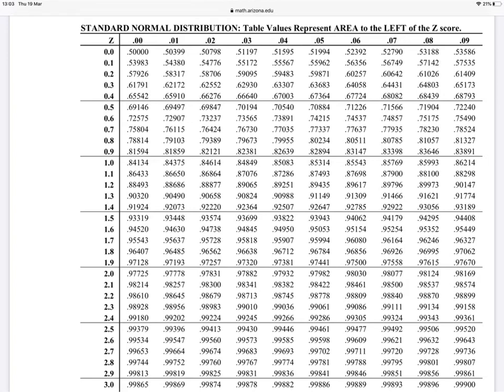So we go to our Z table, our standard normal distribution table. And we're looking for 2.25. There's 2.2. And 0.05 is up there. So we want to come down until we find 2.2, go across, and we're looking for that number there, 0.98778.